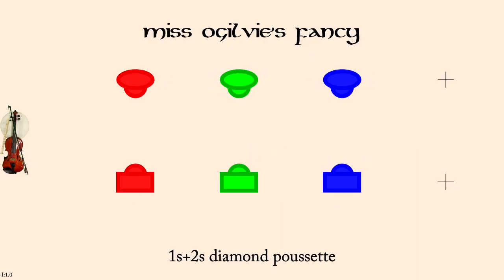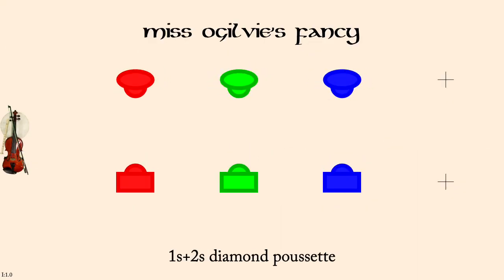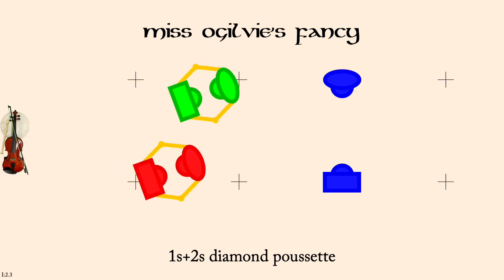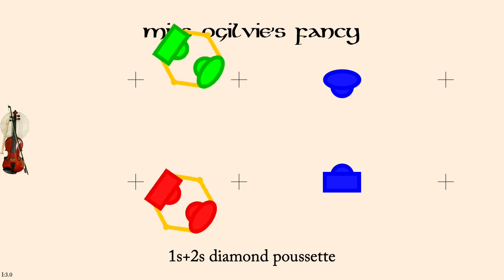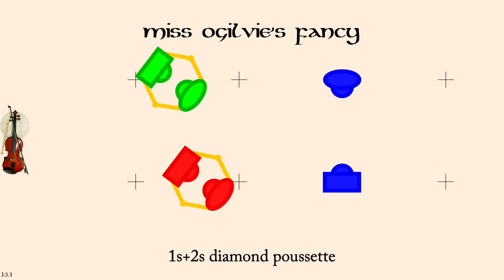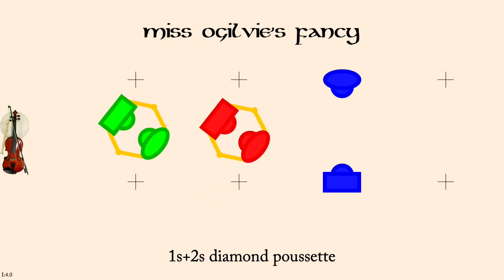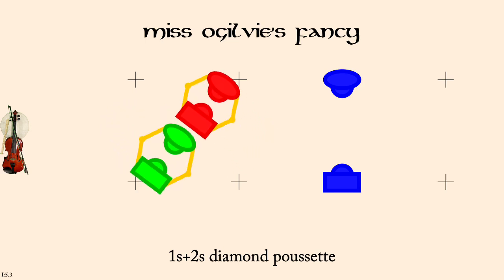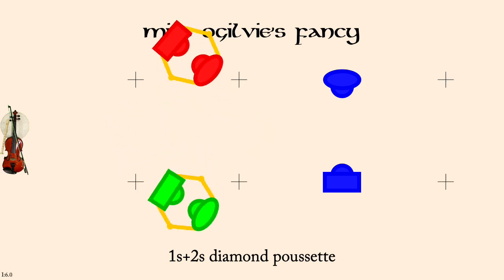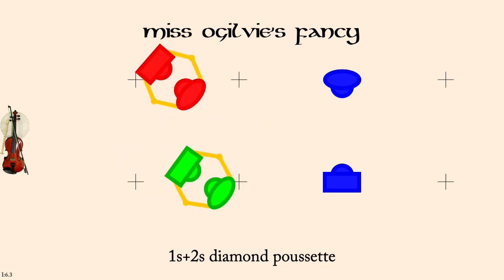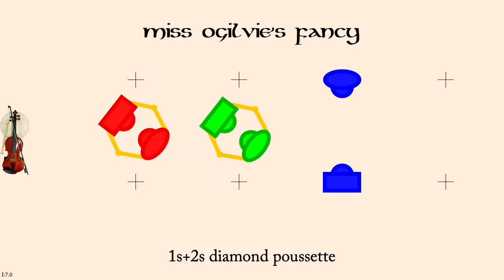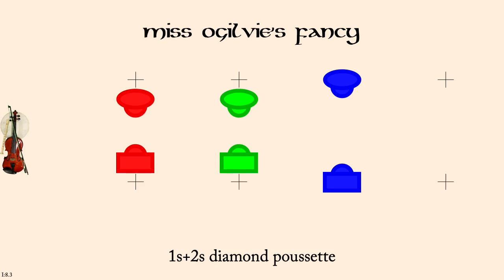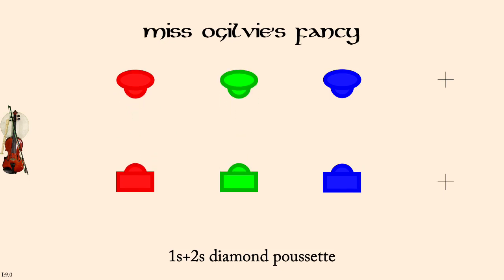Ones and Twos, Diamond Pousset. Ones lead down, turn, lead back, and cast down as twos lead up.